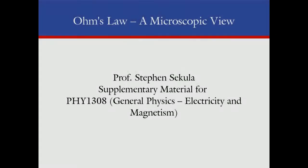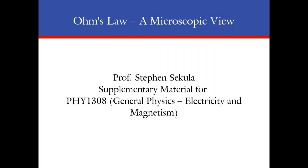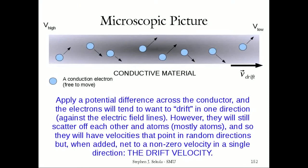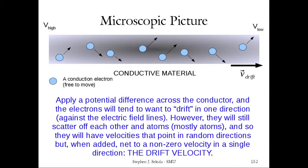In the microscopic world, as pictured in this cartoon, you have some material made of atoms. For a conductor, some of the electrons in each atom — one or more of them — have to be loosely bound to their parent atom, so that under the influence of even a modest electric field, they can be removed and motivated to accelerate in a particular direction.